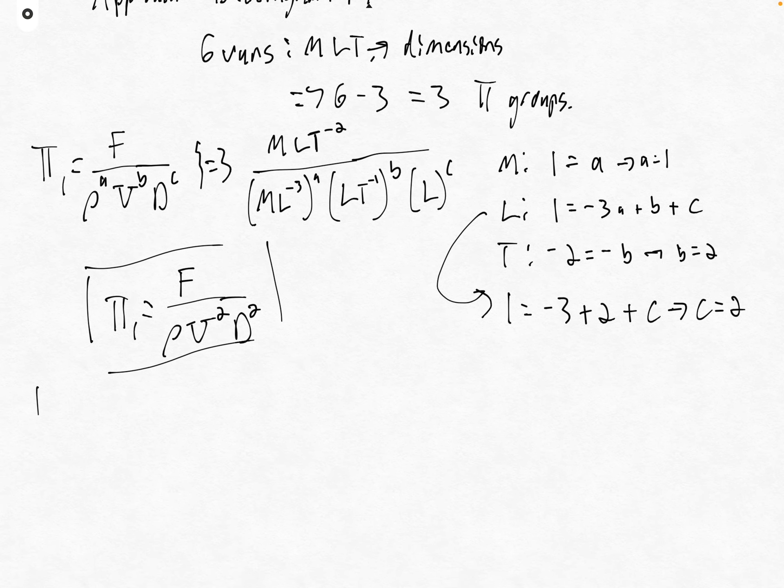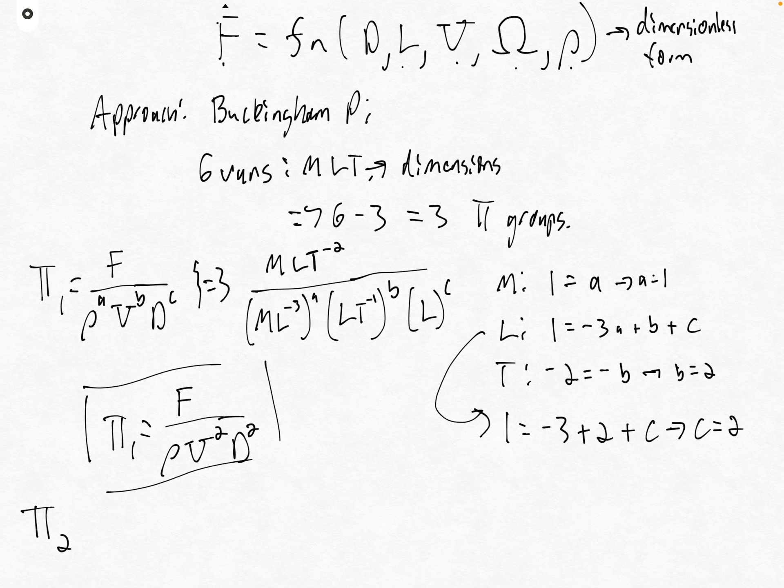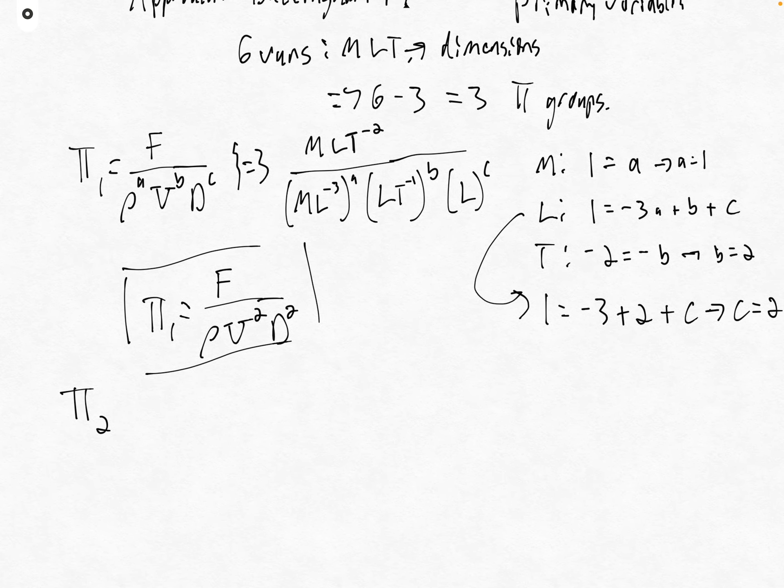Moving on to pi group two, this will involve the next variable we haven't taken care of. Our repeating or primary variables are d, u, and rho. We've taken care of force, so the next one is length.